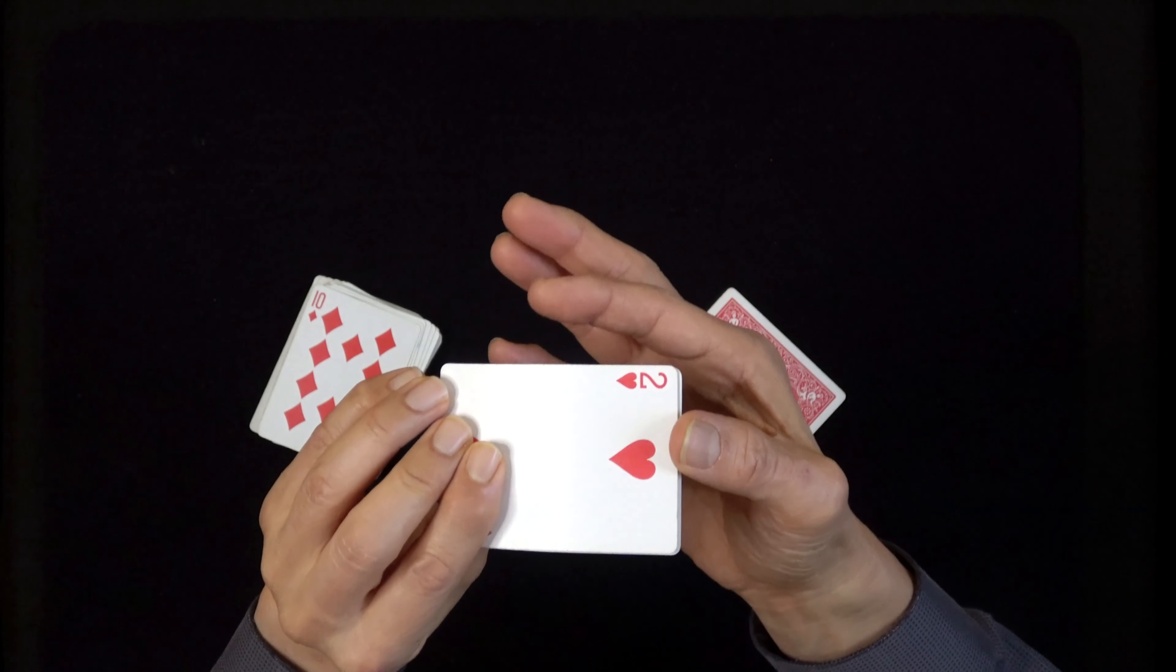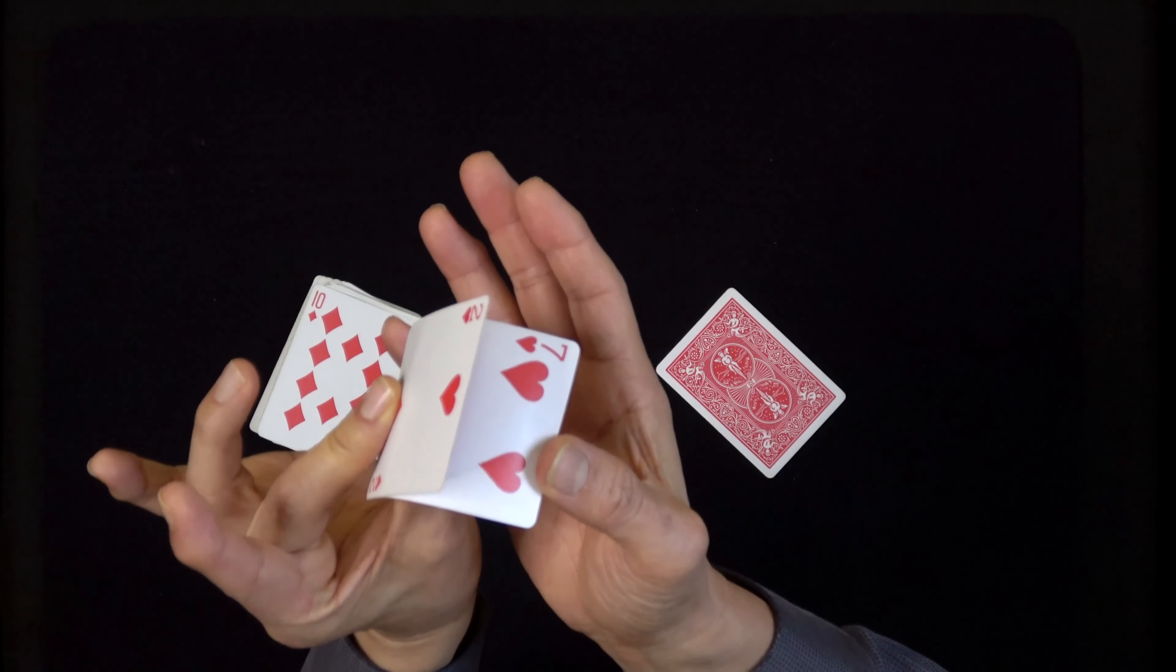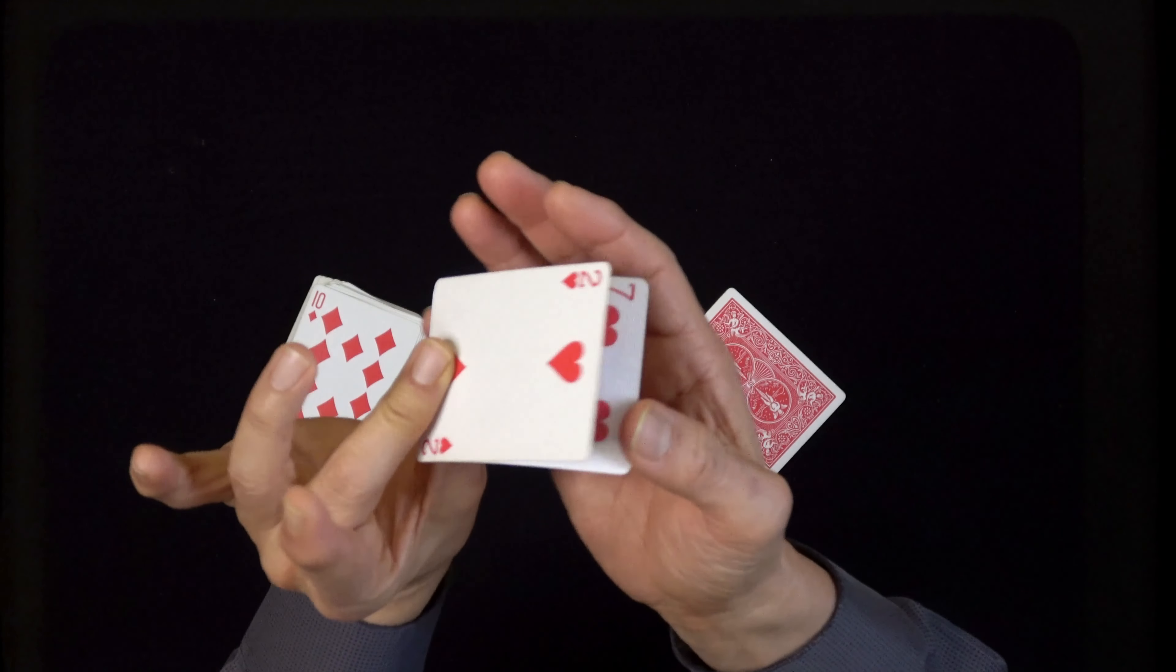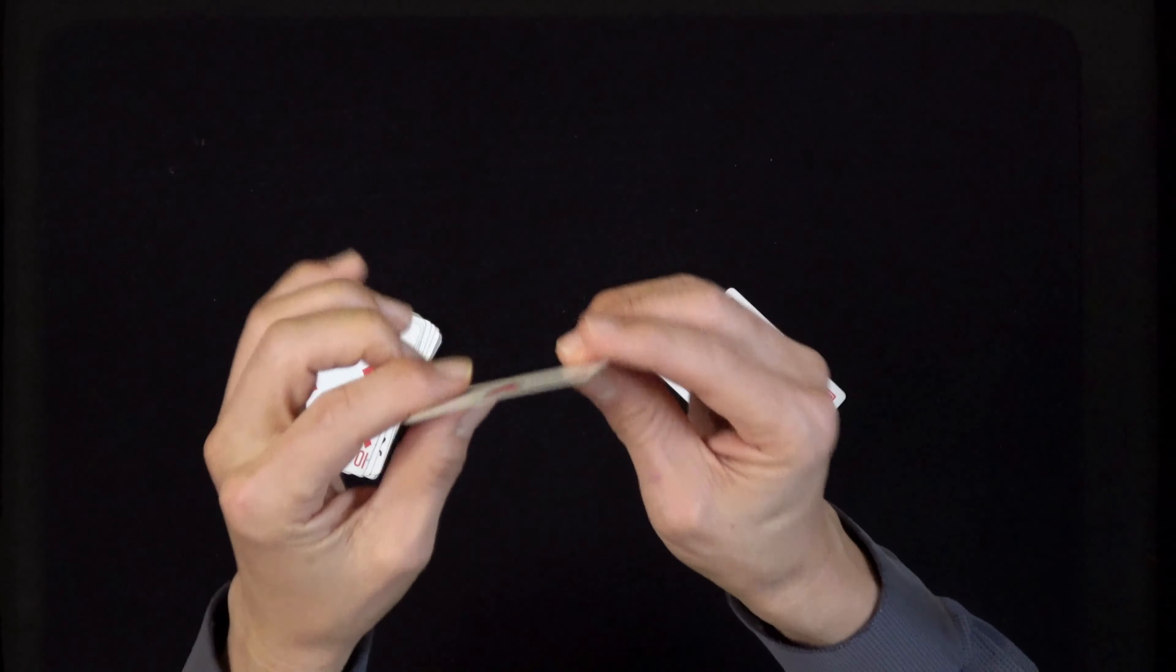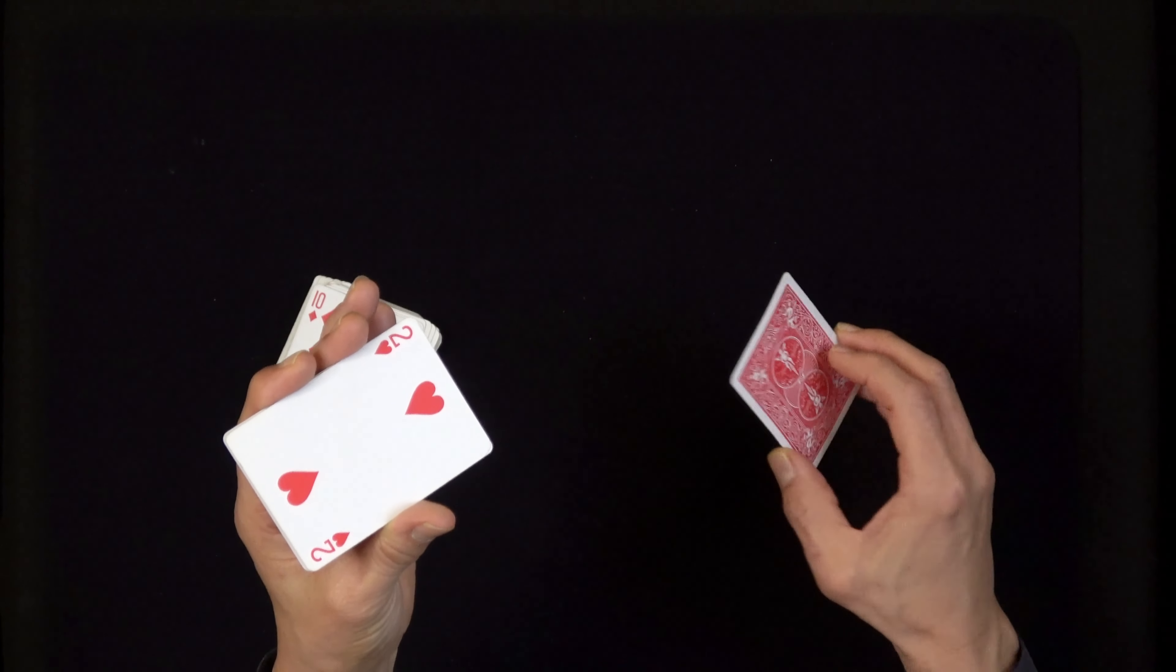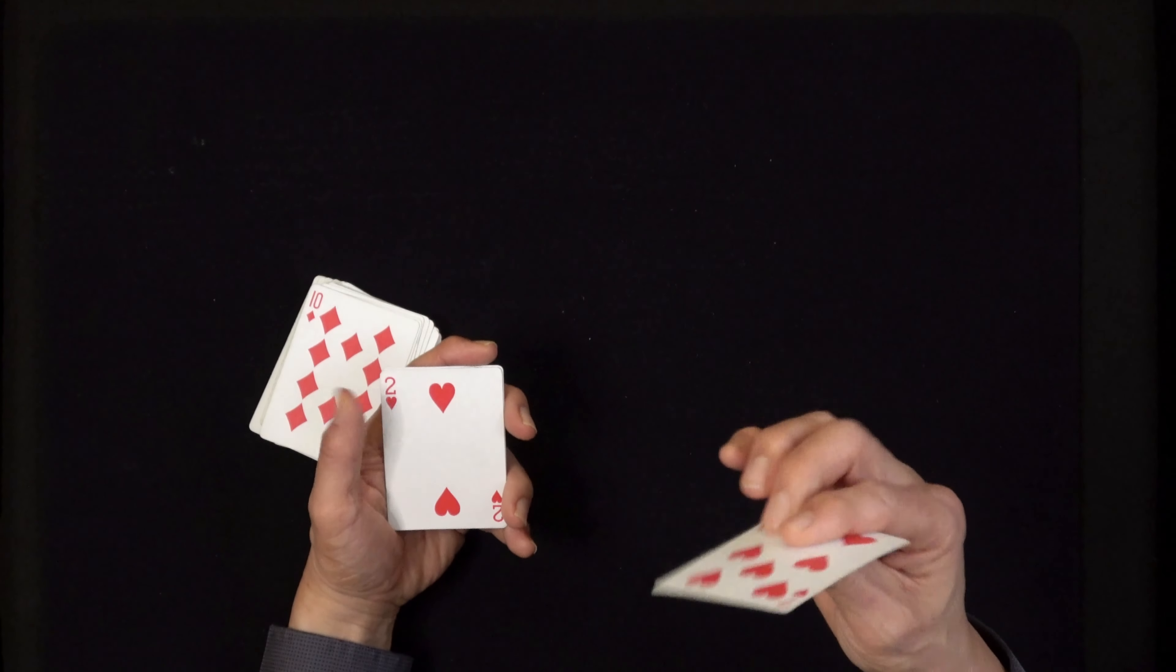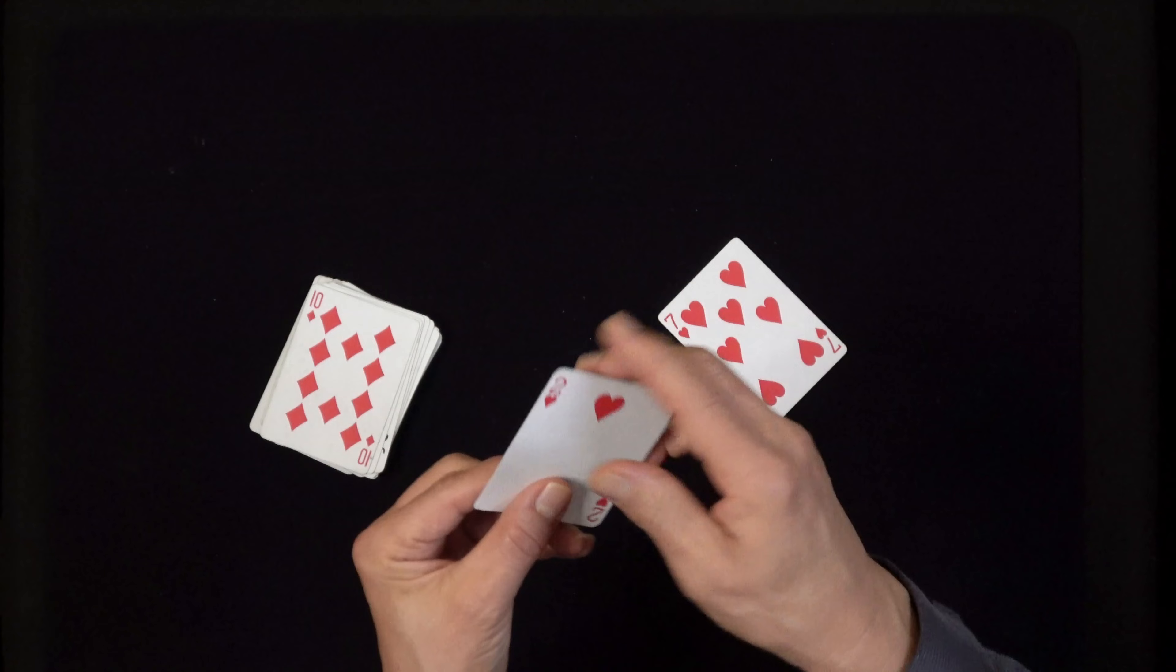And one other little thing I've done to this is the two of hearts is trimmed just slightly. So it looks pretty normal, but if I hold it like this, the two tends to fly out before the seven of hearts.